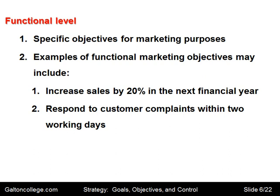At the functional level, we have specific objectives — let's say for marketing purposes. Examples of functional marketing objectives may include increasing sales by 20% in the next financial year, telling the marketing department what must be achieved. Or it may look at how to respond to customer complaints, saying a response must take place within, let's say, two working days. It's down to how the business functions, looking at individual parts and setting targets for them.